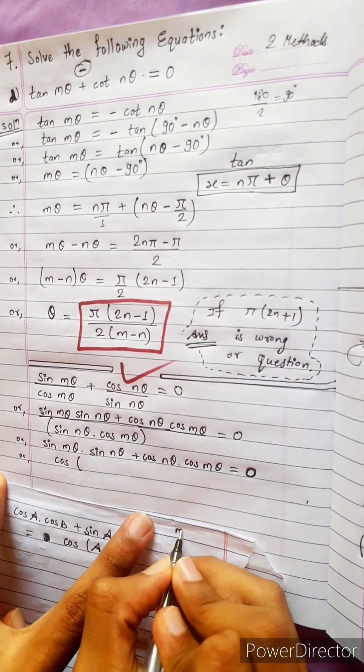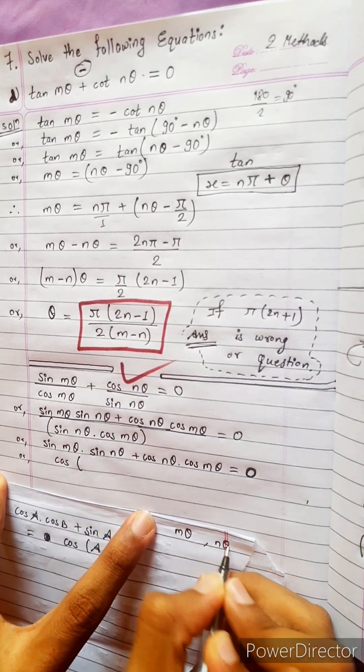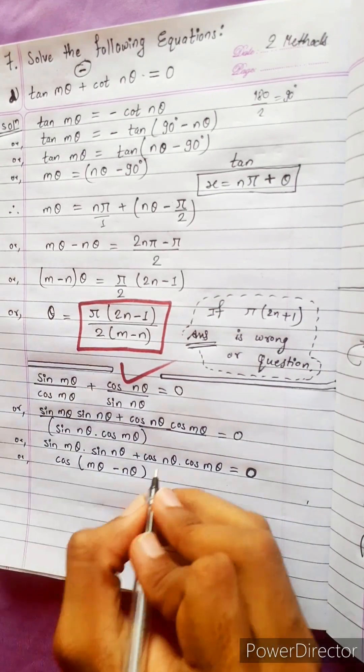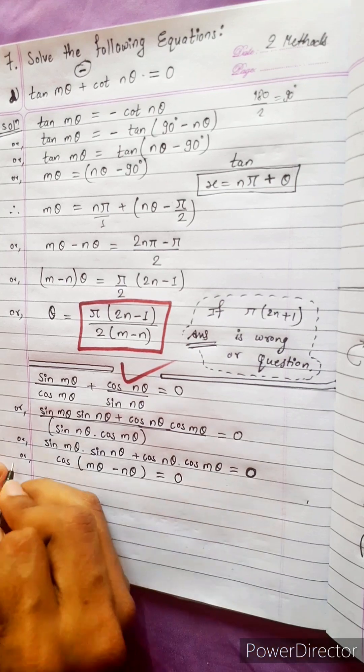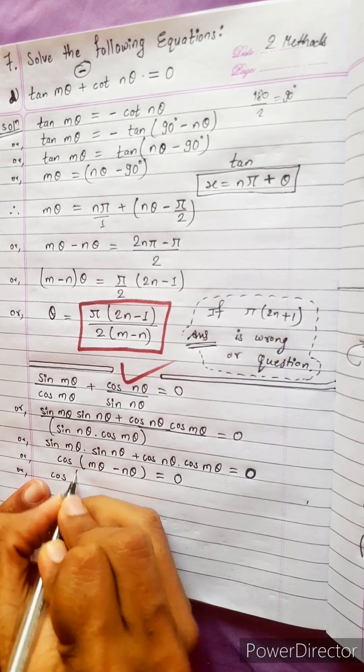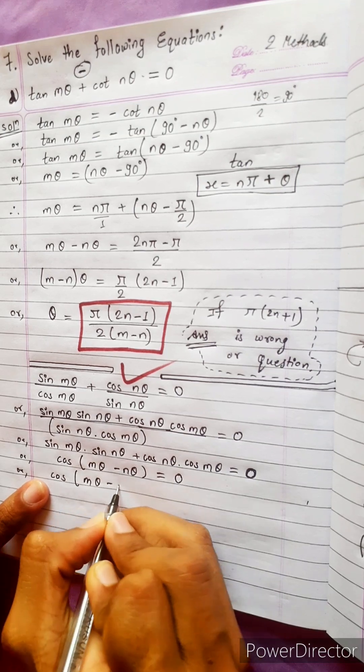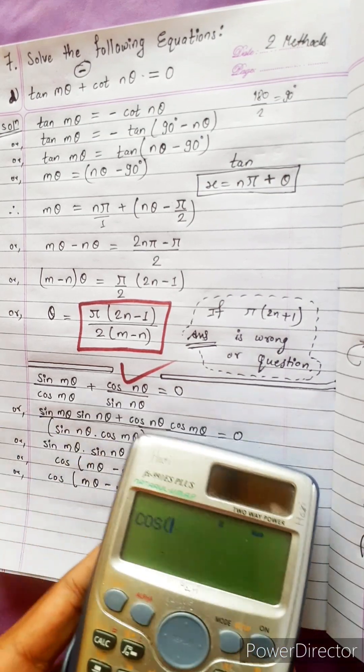So write here cos a minus b. Anything either m theta make a or n theta make a, anyone. Let's make m theta minus n theta. Cos a minus b. After that zero means how much I have already told in previous question.